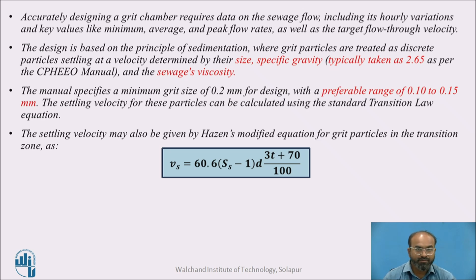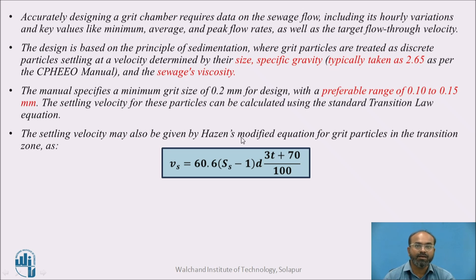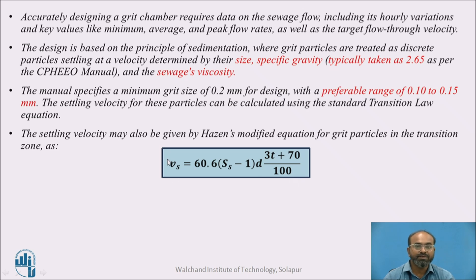Although we design the grit chamber with respect to type one, grit is not a true type one discrete particle — it shows different characteristics. So the design is done with respect to transition zone or transition flow, which can be calculated using Hazen's modified equation. That is: Vs = 60.6 × (Ss − 1) × d × (3T + 70) / 100, where Ss is specific gravity, d is diameter of grit particles in centimetres, and T is temperature of sewage, giving the settling velocity of grit particles.